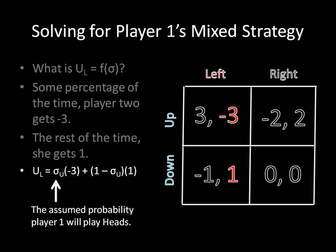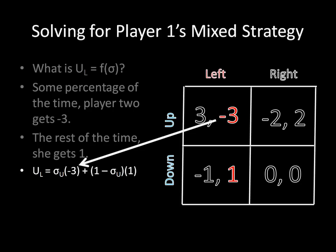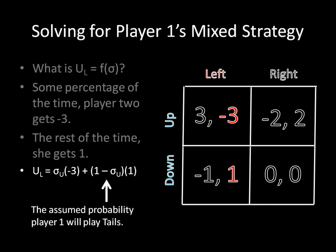Let's be explicitly clear where all this came from. Sigma of u is the assumed probability player 1 will play up. That's what we're going to solve for. The negative 3 is player 2's payoff when she is playing left and player 1 is playing up. We know that negative 3 should be here because we're trying to solve for the utility of player 2 playing left, and we just wrote down the probability of playing up. So you have up and left right there converging to give us negative 3. That logically generates the payoff in the top left part of the matrix.